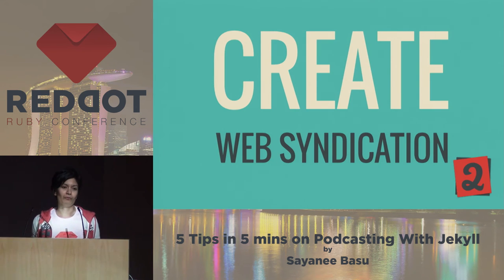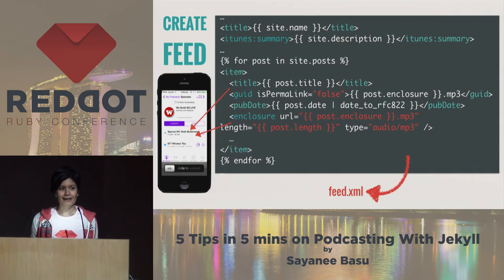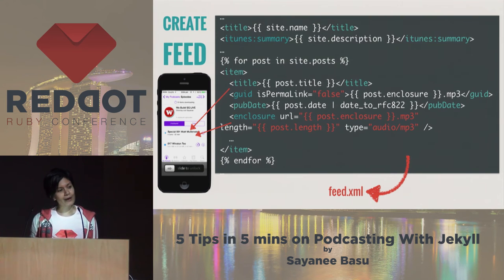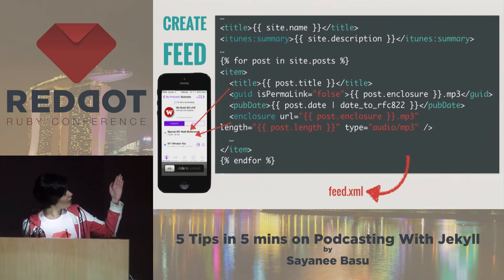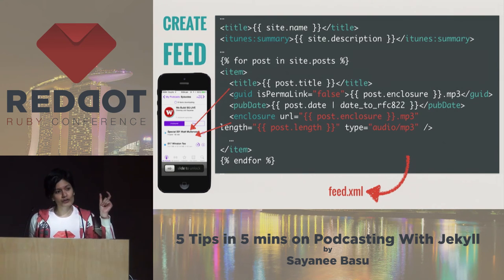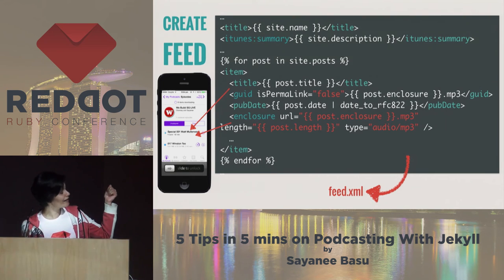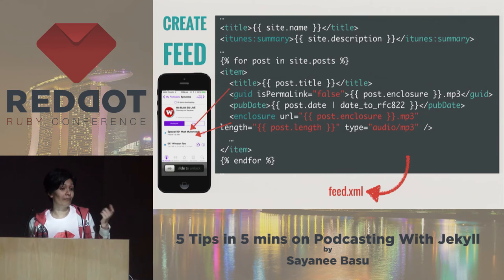Tip number two: create web syndication. If you're hosting a blog, web syndication is usually done via the format RSS or Atom. Jekyll allows you to have a template — here I'm creating the feed.xml and looping through every episode or post. Here you also see I'm including the enclosure tag, which is picked up by podcast apps such as iTunes on your mobile. And that's how you get each of your podcasts.